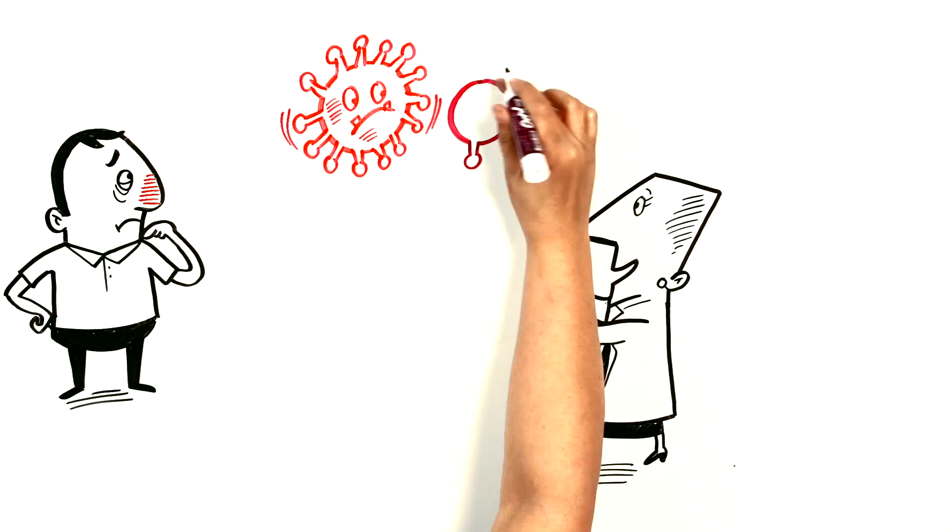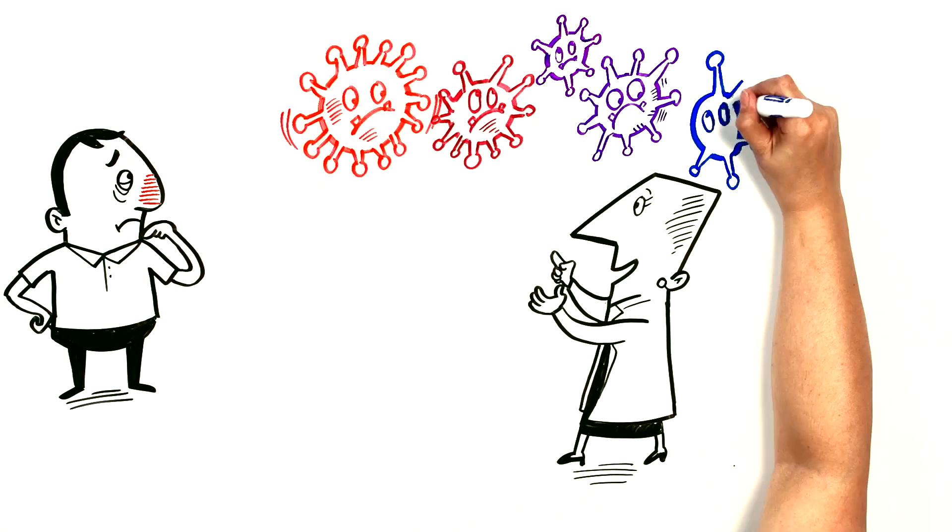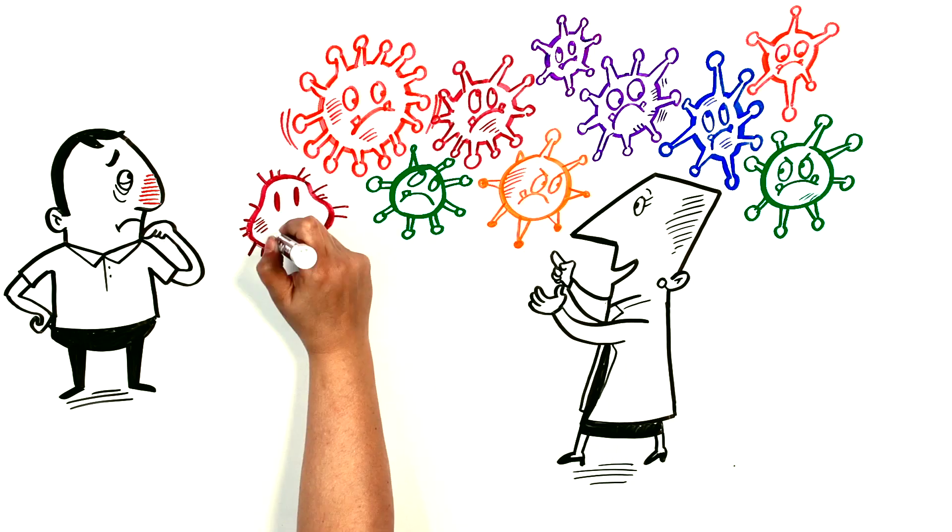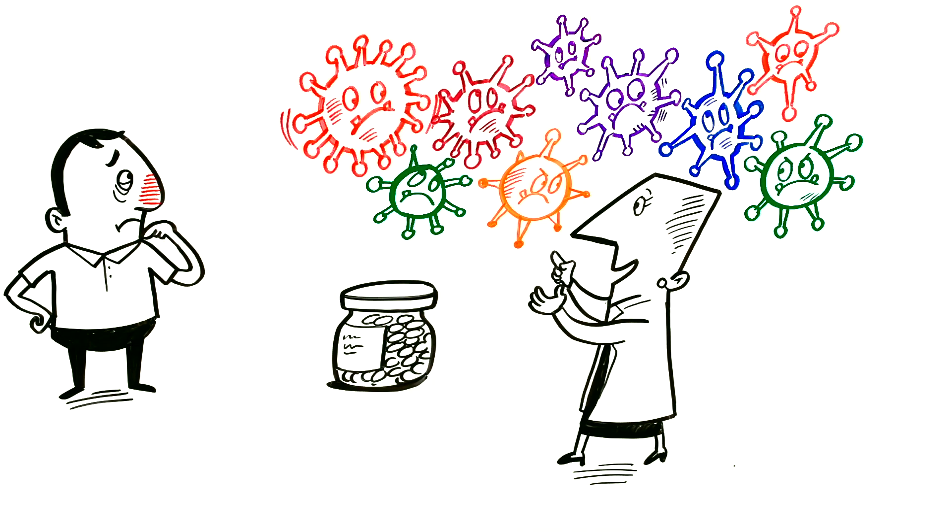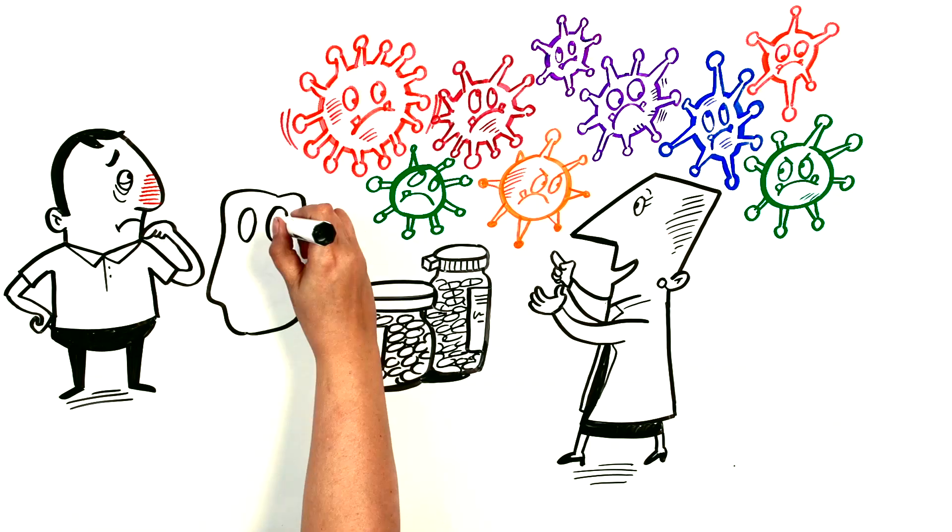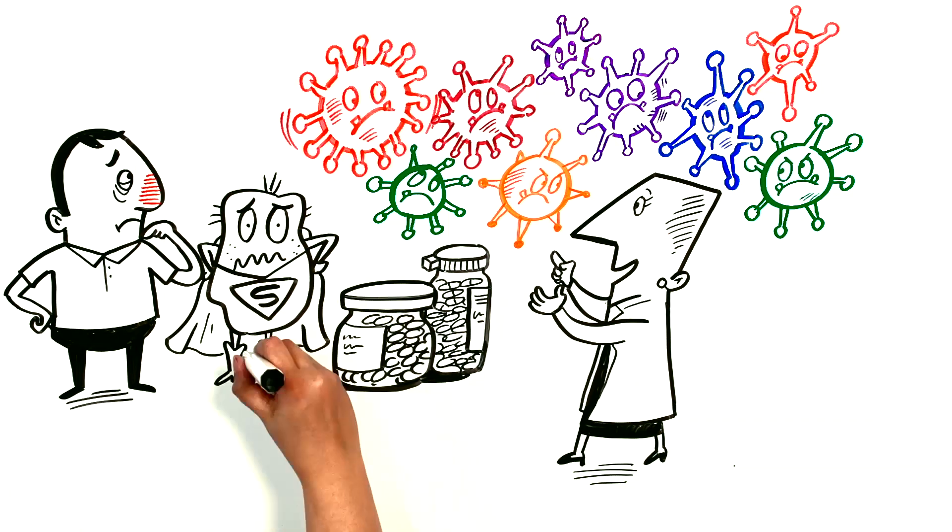She said, there are many different types of germs causing upper respiratory tract infections, and very few of them can be treated by antibiotics. In fact, many antibiotics can also have side effects and overuse can cause bugs to become resistant, making them super bugs.